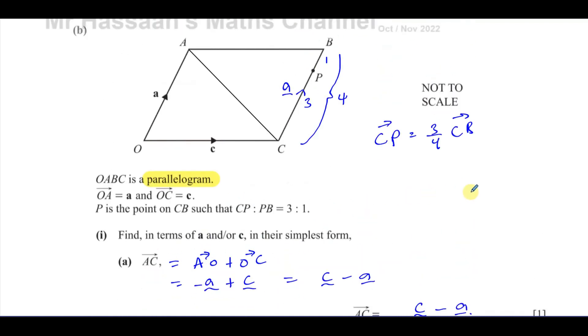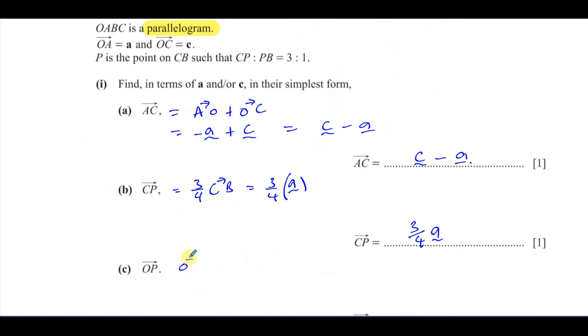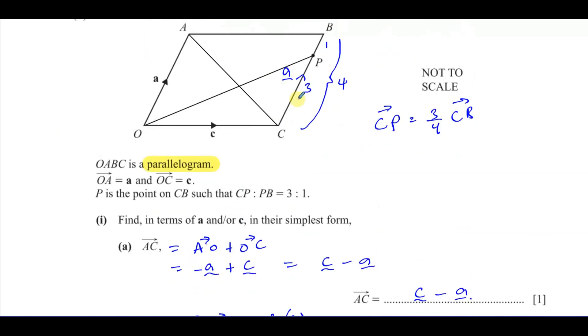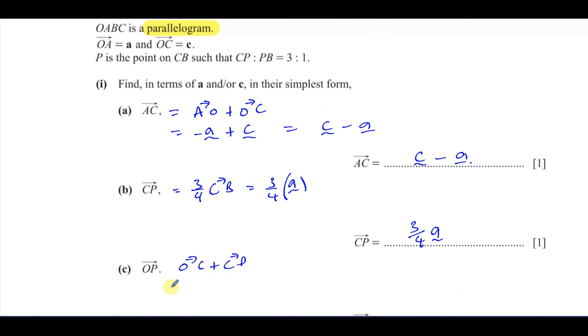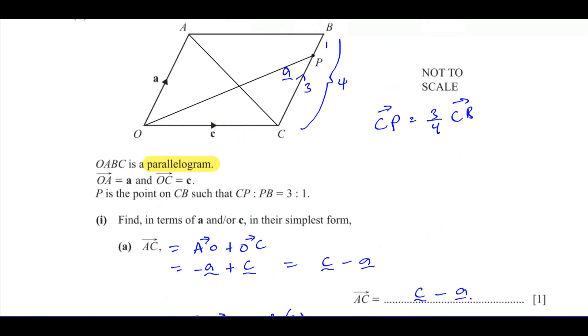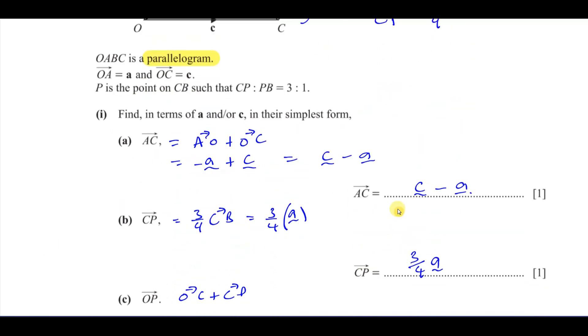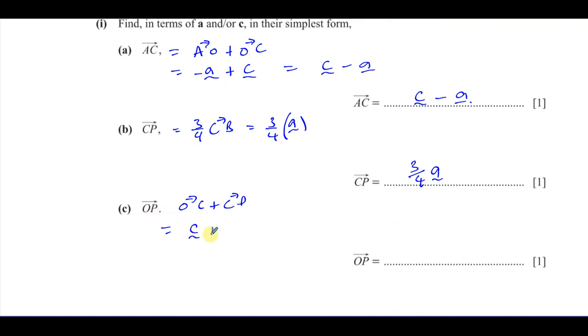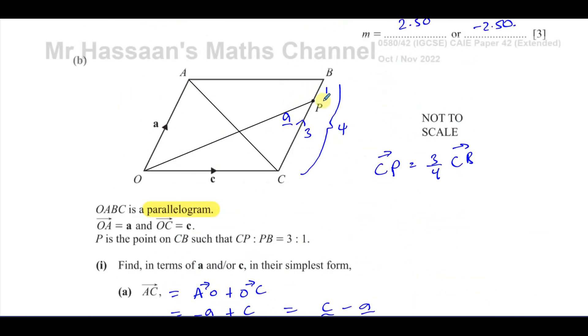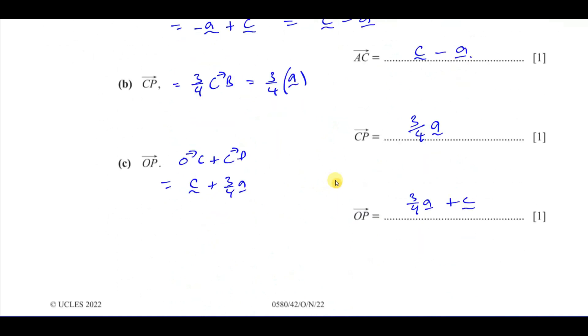Then it says O to P. Now O to P is from here to there. Well, that's pretty simple as well because you're going to go from O to C and then C to P. And we know both of them. So O to P is from O to C and then from C to P. So O to C plus C to P. And we know O to C already is the vector C and C to P, we just found it as three quarters of A. So O to C is the vector C plus three quarters of A. We can write it as three quarters of A plus C if you want, no problem, that's fine, both ways are fine. So C plus three quarters of A, that is the vector from O to P.